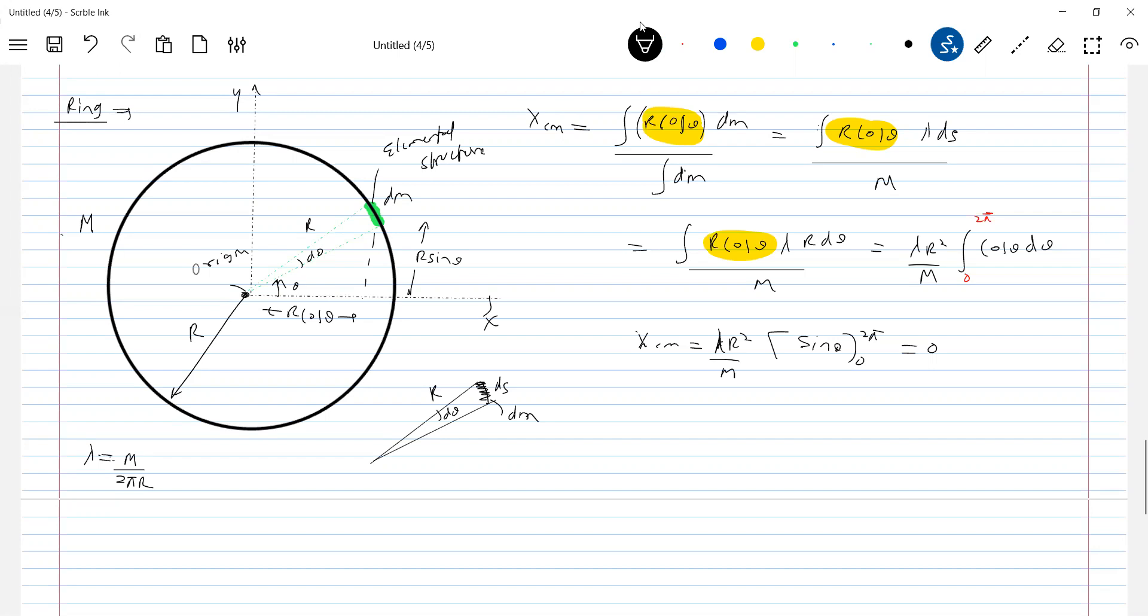Similarly, we'll go for y_cm. Integral of r sin θ dm by dm. Again, there should be limit 0 to 2π sin θ. So, what is the value of dm? dm should be equal to λ ds. Further, what is y_cm? It should be equal to r sin θ. λ ds is r dθ. Limit will be 0 to 2π. So, λ r square by m dθ.